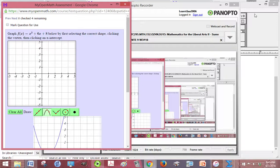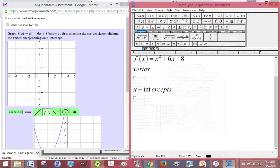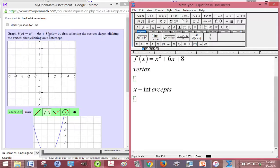Alright, in this problem we're trying to graph this parabola x squared plus 6x plus 8 below by first selecting the correct shape, clicking the vertex, and then clicking an x-intercept.